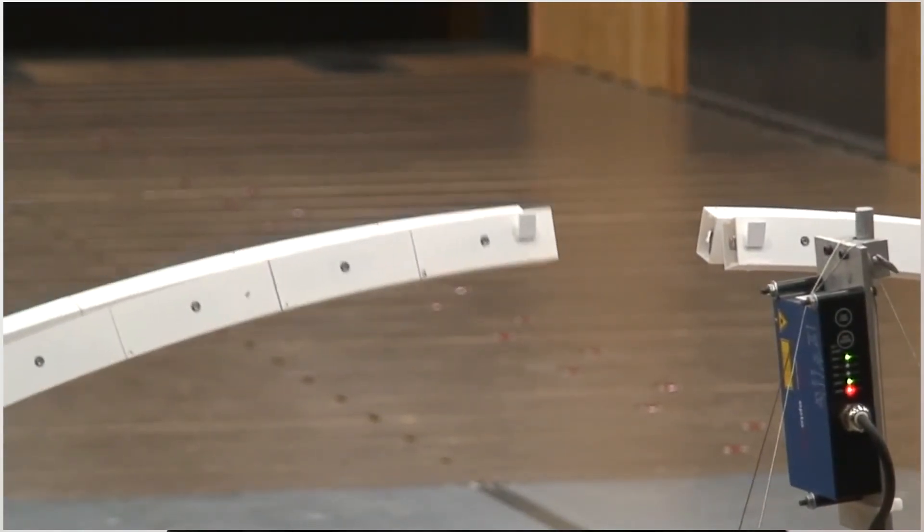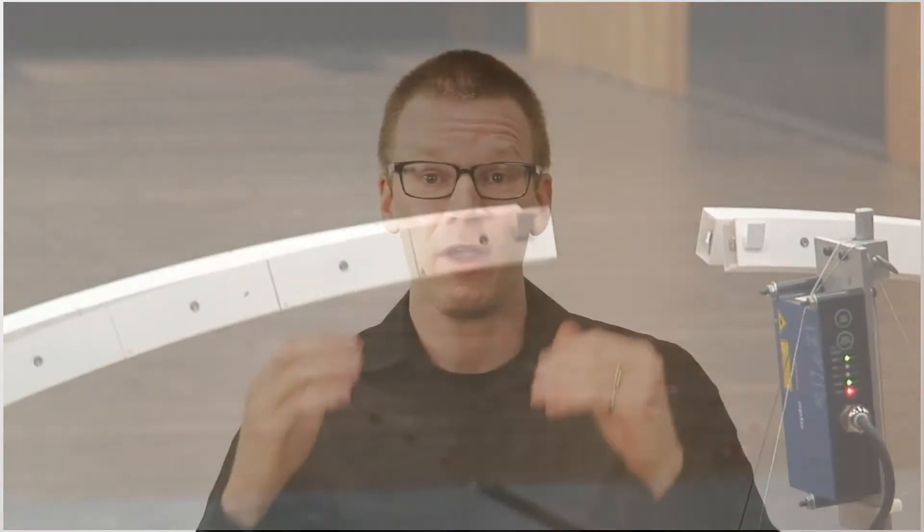A bridge is often most susceptible to wind induced motion during a stage of construction. For example, an arch before it's closed in is quite flexible as both ends of the arch can move, so it's important to consider these stages of construction as well. If there's potential for a windy day to get these arches moving in the wind, we need to apply a damping system to reduce this motion and make sure the structure is safe during all stages of construction and operation.